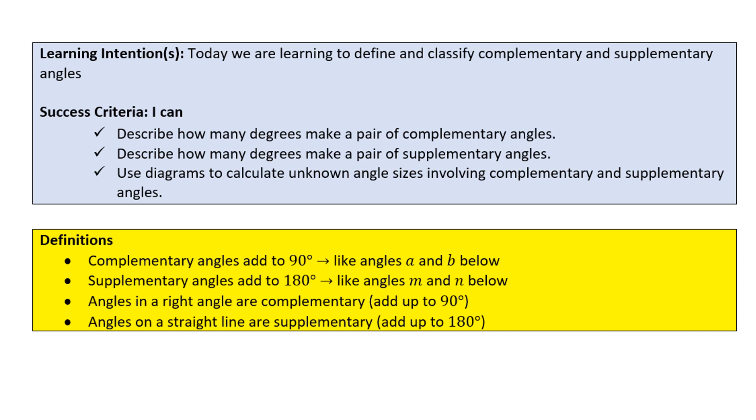Angles in a right angle are complementary angles because they add up to 90 degrees, and angles on a straight line are supplementary angles because they add up to 180 degrees.